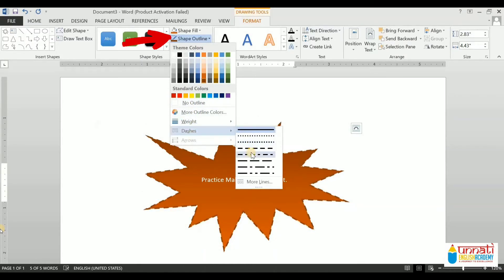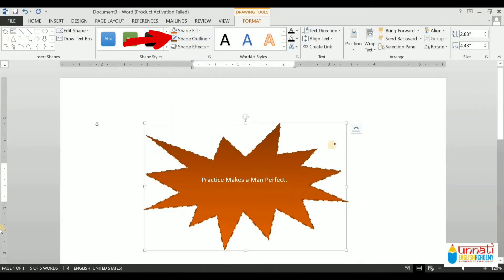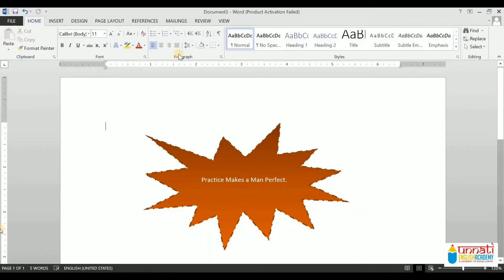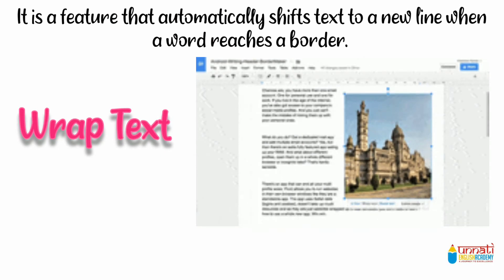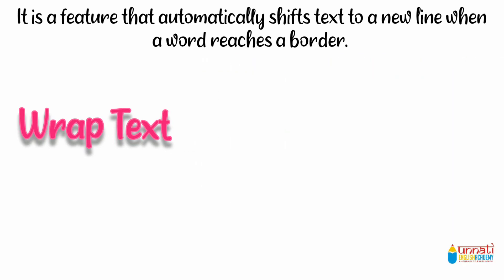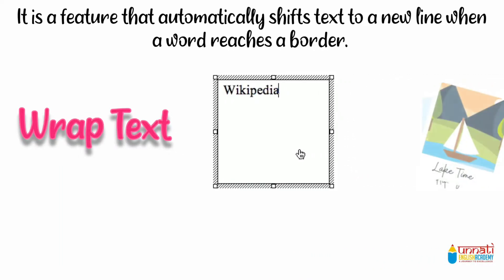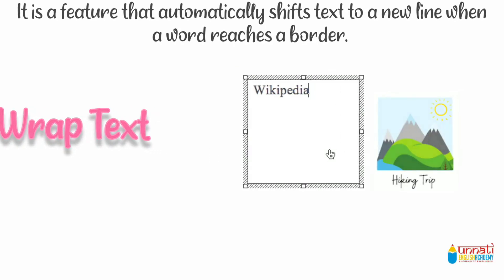That's it. Now we will see the next object, that is Wrap Text. Wrap Text is a feature that automatically starts a new line when a word in a sentence reaches a border of an object. The objects on which these features may be applied are text boxes, pictures, or even the border of a cell or a margin. Let's see how. First we will understand what is Wrap Text.